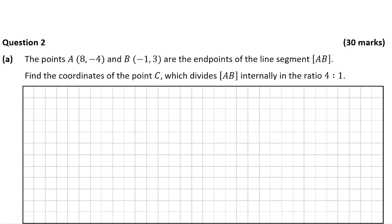We're told that the points A, which is (8, -4), and B, which is (-1, 3), are the endpoints of the line segment AB. We're asked to find the coordinates of the point C which divides the line segment AB internally in the ratio 4:1.